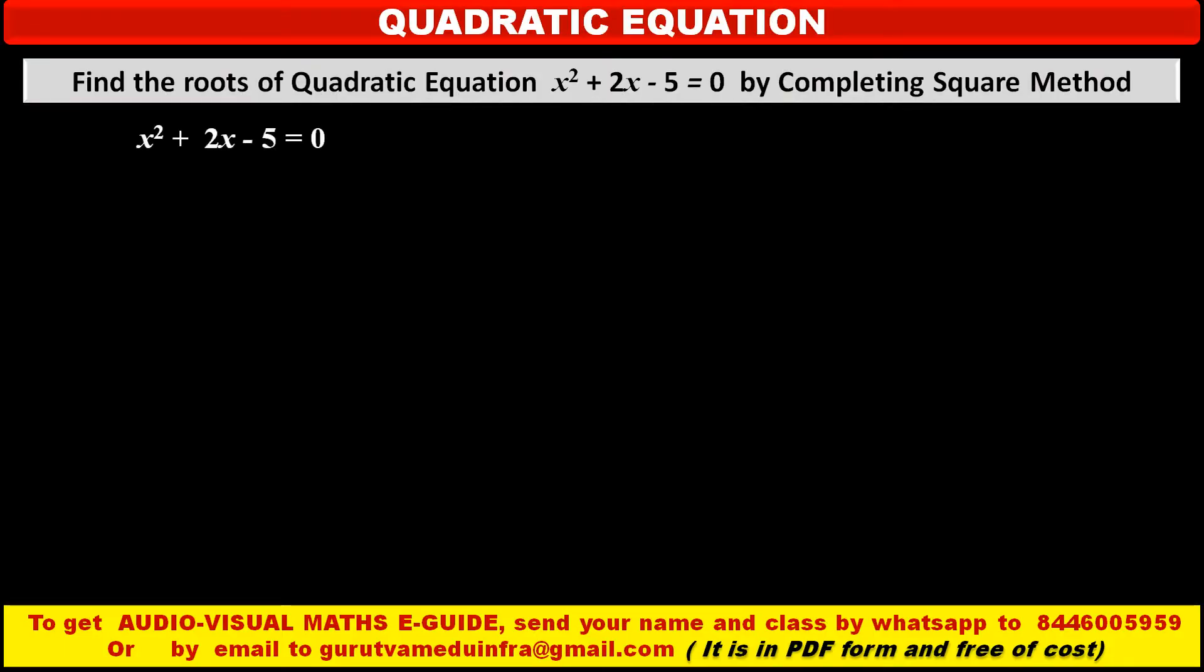Now see, the given quadratic equation is x² + 2x - 5 = 0 which we have to solve by using completing the square method.